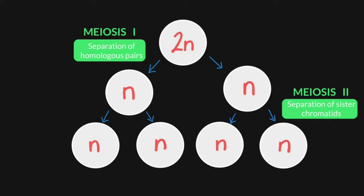Meiosis is a form of cell division whereby one diploid nucleus goes through two divisions in order to form four haploid nuclei. In each division, meiosis 1 and meiosis 2, there are four stages: prophase, metaphase, anaphase, and telophase.